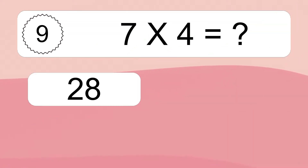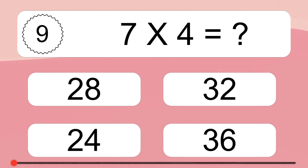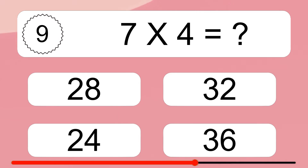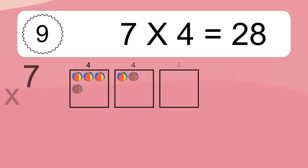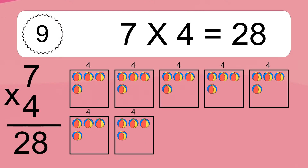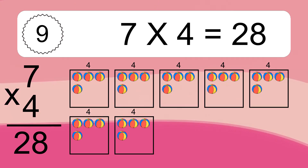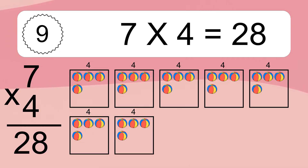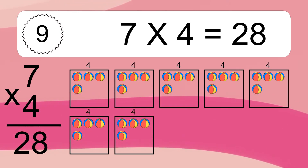7 times 4 equals what? 7 times 4 equals 28. We have 7 boxes and each box has 4 colorful balls inside. If you count all the balls in all the boxes together, you will have 7 times 4 balls. This equals 28 balls.